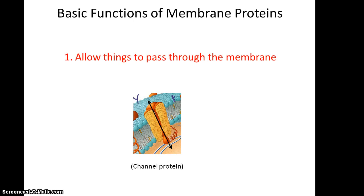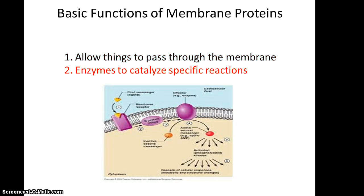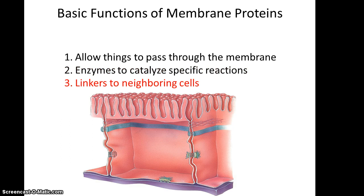Some of the basic functions of membrane proteins: one is to allow things to pass through the membrane — for instance, a channel protein of a particular size will let anything that size or smaller pass through. They can also be enzymes that catalyze specific reactions. Often, a messenger will bind to a receptor on the surface of a cell, eventually leading to chemical reactions at the cell surface. These proteins can also link to neighboring cells, keeping them together — very important for tissues.